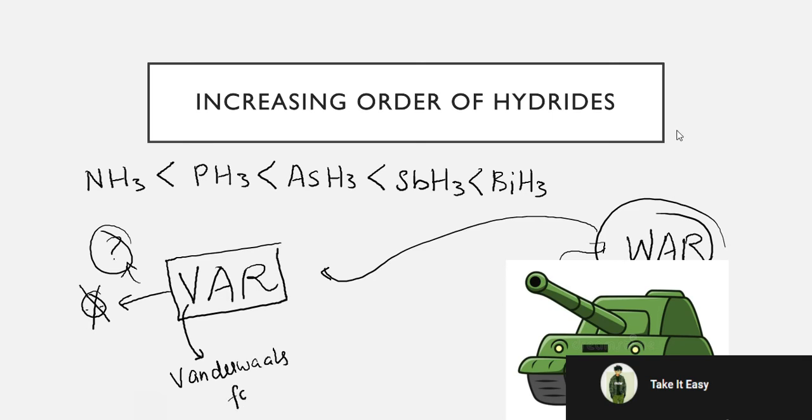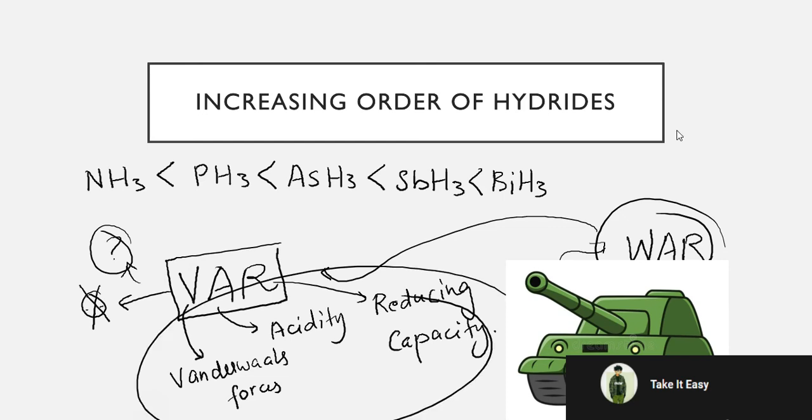Now what does this represent? The V represents van der Waals forces of attraction, the A represents acidity, and the R represents the reducing capacity of these elements. So VAR: van der Waals forces of attraction, acidity, and reducing capacity.